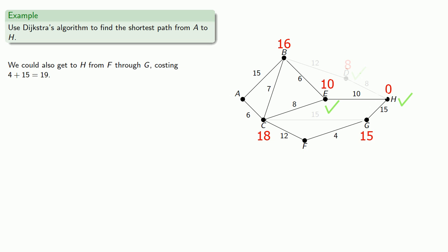The other way we could have gone to H through G is by starting at F. So we could also get to H from F costing us 4 plus 15 or 19. Since we've considered all edges leading into G, we can ignore it and mark it off.